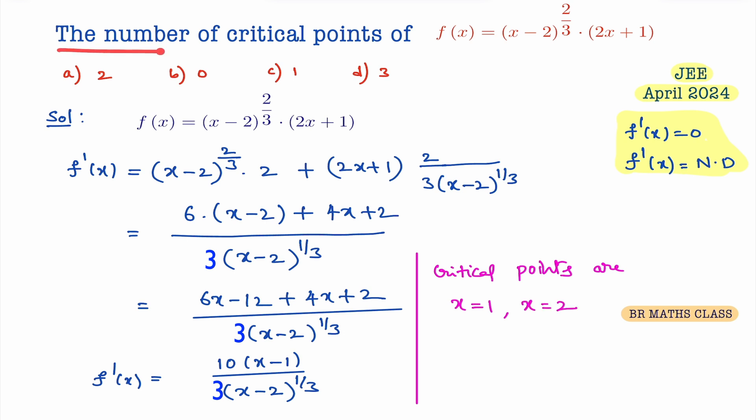So number of critical points of this function, how many critical points are there? Total two critical points are there, 1 and 2. So the right option is first option. Total number of critical points are 2.